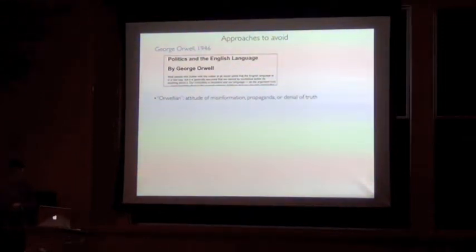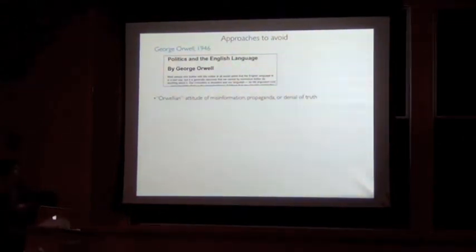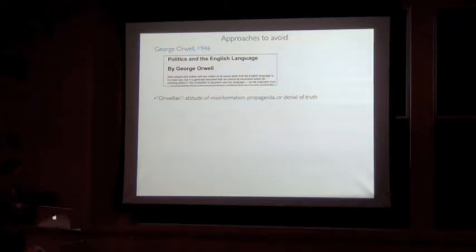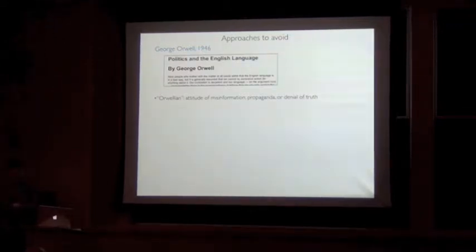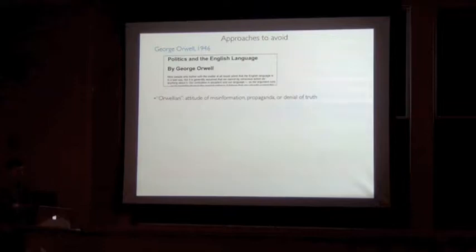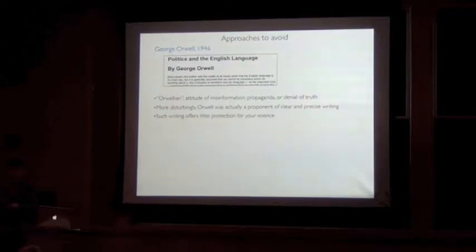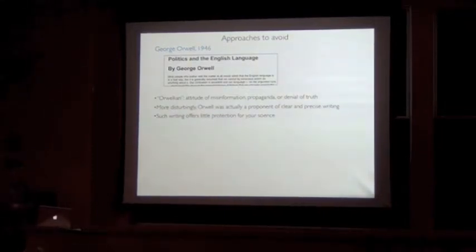And so before we go into the details, it's worth pointing out those approaches in the literature that are best avoided. So George Orwell, in 1946, wrote an essay, Politics and the English Language. So the phrase Orwellian has come to mean an attitude of misinformation, propaganda, or denial of truth. But more disturbingly, Orwell was actually a proponent of clear and precise writing, exactly the kind of writing that offers little protection for your science, best avoided.